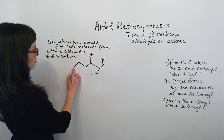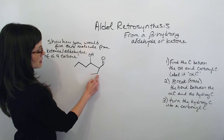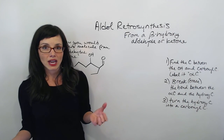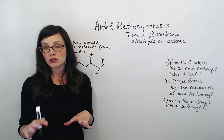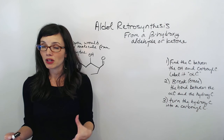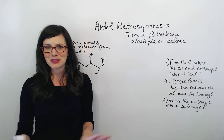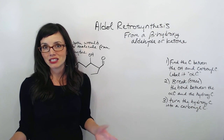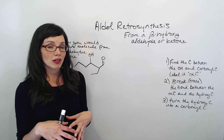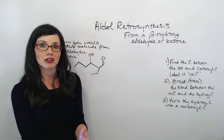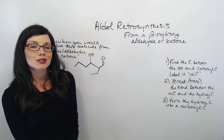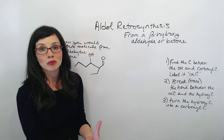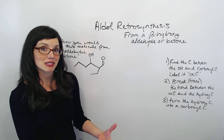It has a total of eight carbons. Since there's a total of eight, that means we can put two four-carbon molecules together to make it. That's exactly what aldol addition is — two four-carbon molecules coming together to make an eight-carbon molecule. So I can just basically divide it in half to find the two molecules that came together to make it.